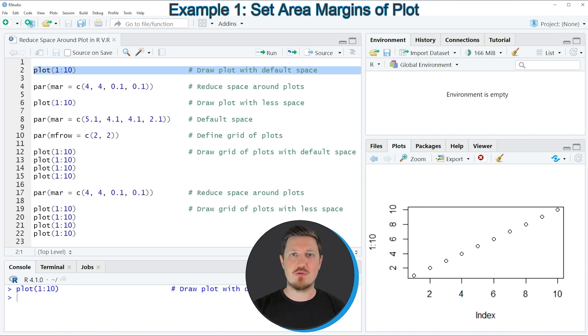Let's assume that we want to reduce this space around the plotting area. Then we might apply the par function and within the par function we have to specify the mar argument. To the mar argument we have to specify a vector with a length of 4 and each of these values corresponds to the space on one side of the plot. If you run line 4, our options for the plotting window are updated and you can see that by drawing our plot once again by running line 6.